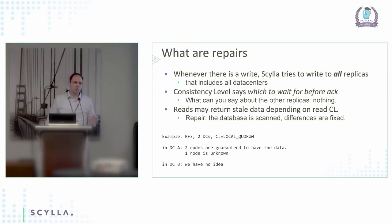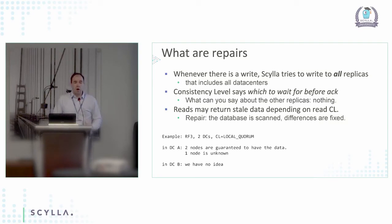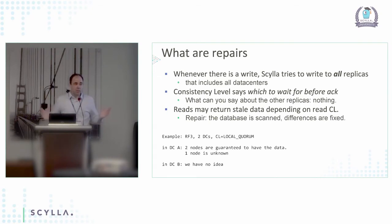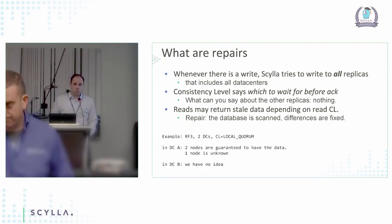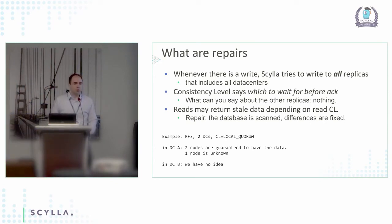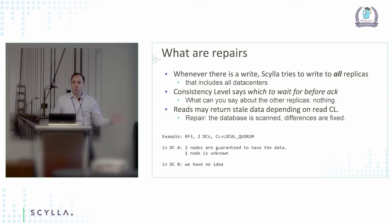There is no case where Scylla will skip writing to a node — if the node is down it cannot write to it, but it always tries. The consistency level says how many replicas have to respond before the write is considered successful. The consequence is that you cannot know what happened on the other replicas. If you write with quorum or local quorum, two replicas are guaranteed to have the data because the write returned success, but there is nothing you can say about the third replica.